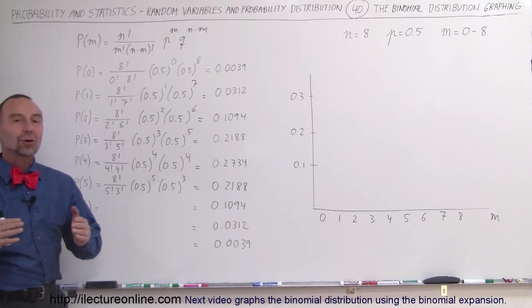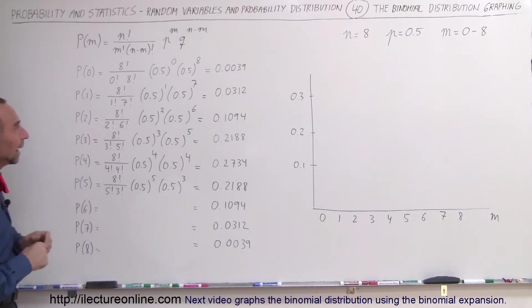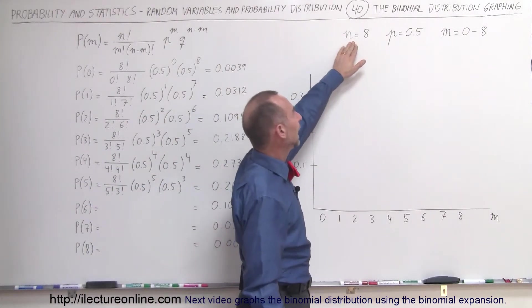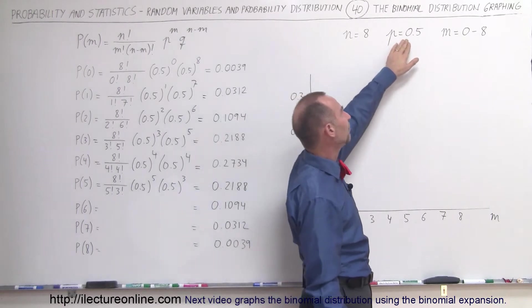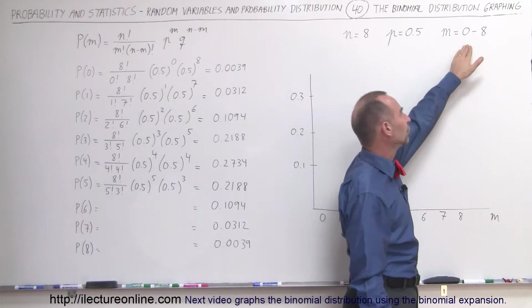Welcome to our lecture online. Now let's go ahead and try to graph a binomial distribution. In our example, we have n equals 8 trials and the probability of success is 0.5, and we want to know what the results are for successes going anywhere from 0 to 8.